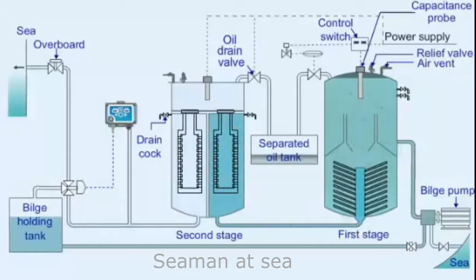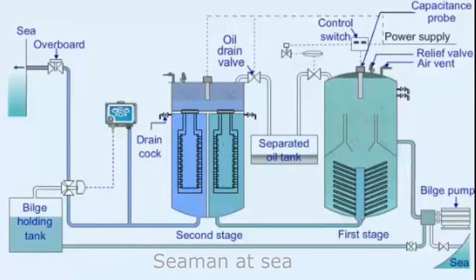The filter in the right chamber removes solids and some oil. Coalescing filters in the left chamber take out the remainder of the oil in the form of small droplets, which coalesce to form larger drops. These rise to the oil collecting space.